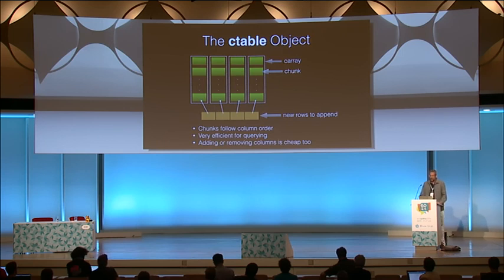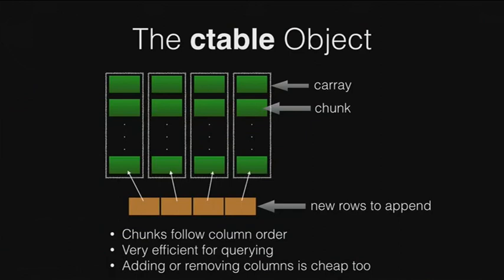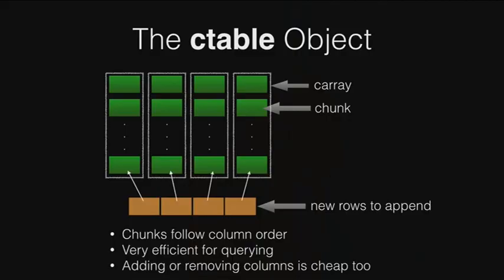The C-table object is basically a dictionary of C-arrays — it's very simple. The chunks follow the column order, so queries on several columns will fetch only the necessary information. Also, adding or removing columns is very cheap because it's just a matter of inserting and deleting entries in a Python dictionary.